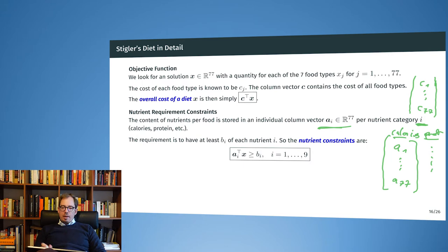Now we can formulate the constraint. We say A_I transposed X has to be larger than B_I, and the B_I is the minimum requirement for the nutrient type I.